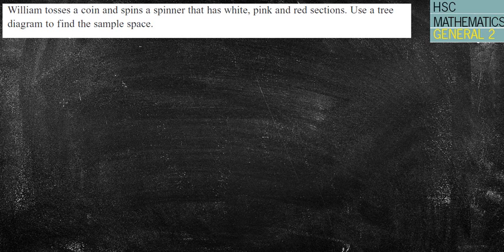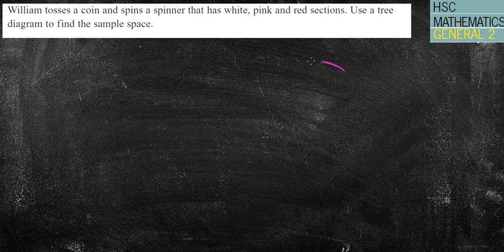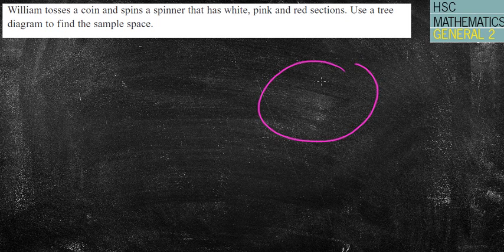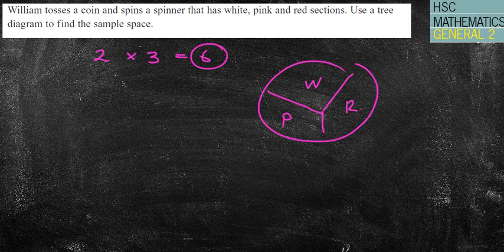William tosses a coin and spins a spinner that has white, a pink, and red sections. Use a tree diagram to find the sample space. So we've got a coin and a spinner. The spinner here has got white, red, white, pink, and red. So I'm going to sort of do in thirds. So that's white, that's pink, and that's red. And we've got a coin, obviously, which has two sections. So we're going to have two options for the coin, three options for my spinner, which gives me six options altogether. Which means that a tree will work quite nicely because it's only six options.